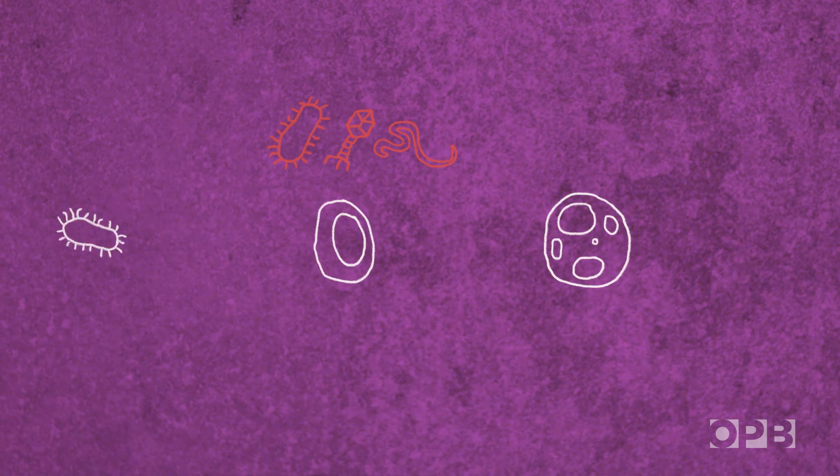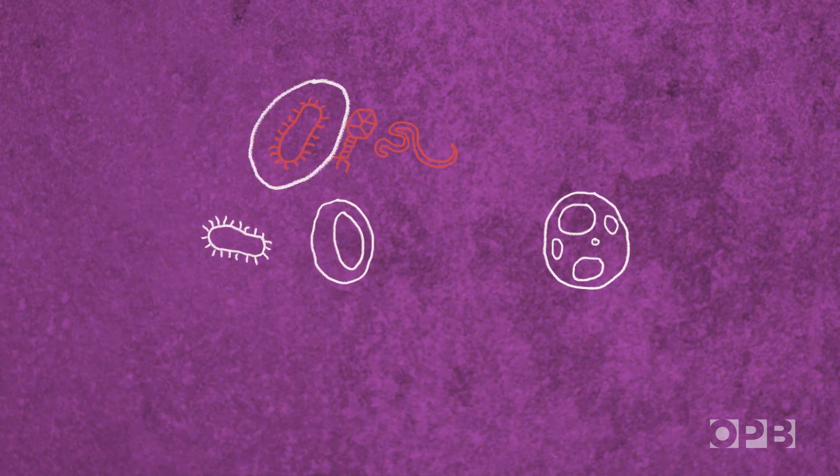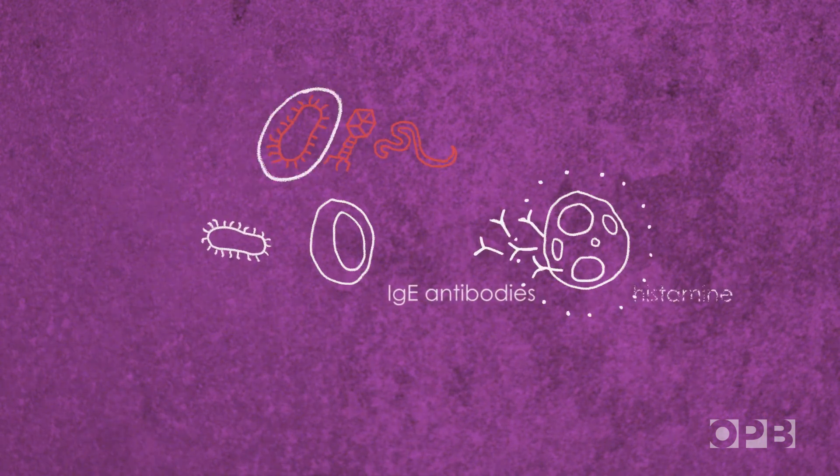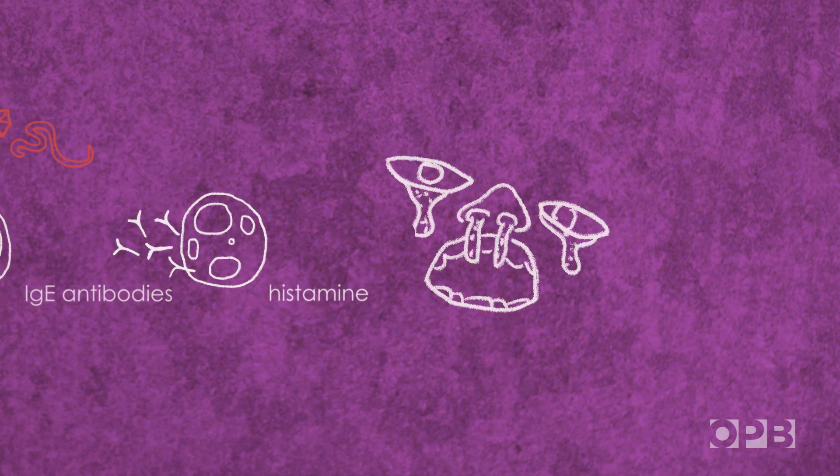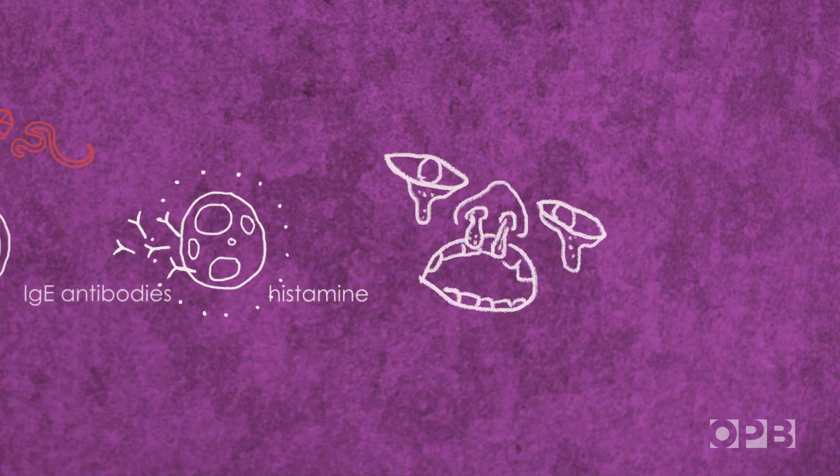When our immune system catches a whiff of a threat it remembers, it kicks off a chain of reactions that make us cough, sneeze, tear up, and produce lots of mucus to fight off the invaders.